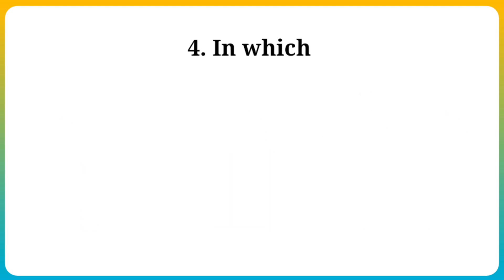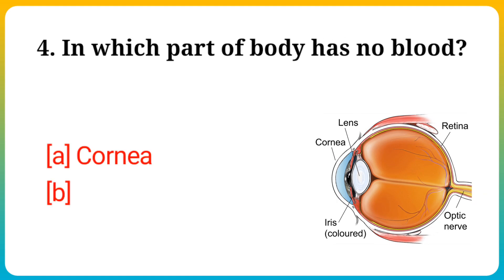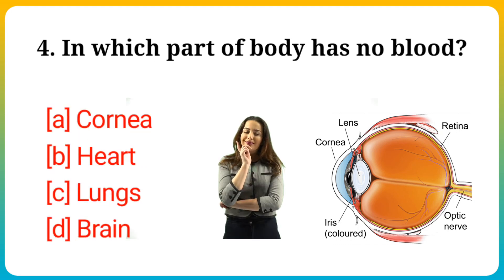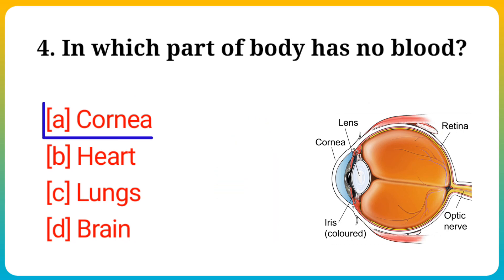Question number 4. In which part of the body is there no blood? Option A: Cornea, B: Heart, C: Lungs, D: Brain. Answer is option A: Cornea.